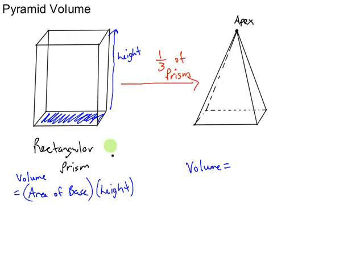Now it's not obvious why that's true and without maybe some calculus or something we wouldn't be able to understand why but just take my word for it that this pyramid takes up one-third of the space that its prism would take up. So the volume of this would be one-third of the prism volume.